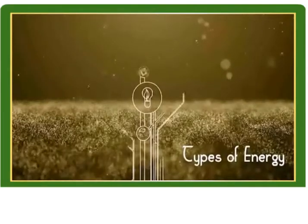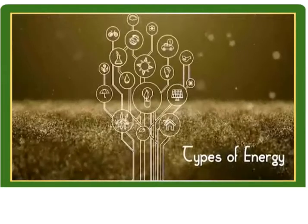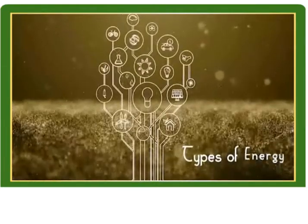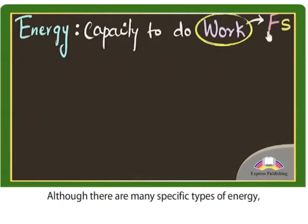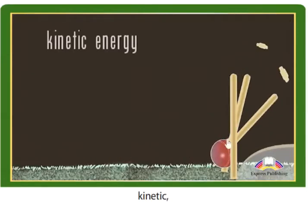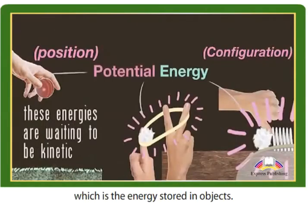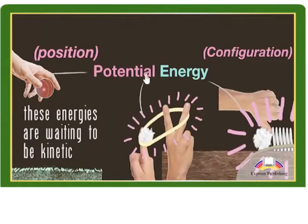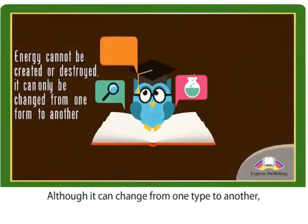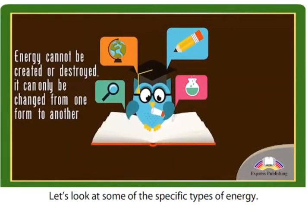Types of Energy. Although there are many specific types of energy, the two major forms are kinetic, which is the energy that moving objects have, and potential, which is the energy stored in objects. Although it can change from one type to another, energy can never be created or destroyed. Let's look at some of the specific types of energy.